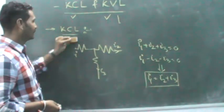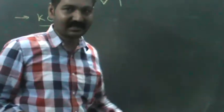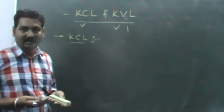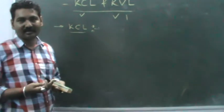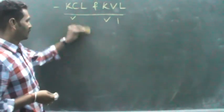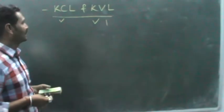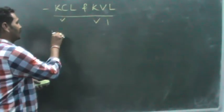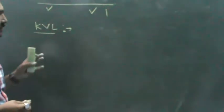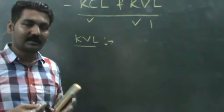Now let us start with Kirchhoff's voltage law. These two laws are the basics of network analysis. All theorems we will study further — such as superposition theorem and Thevenin's theorem — are based on these two laws. According to Kirchhoff's voltage law, in a closed loop the resultant voltage is zero.